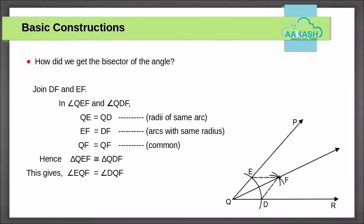Now we will see how exactly we got the angle bisector. Join DF and EF. In triangle QEF and triangle QDF, QE is equal to QD because we have drawn them using same radius. EF is equal to DF since both arcs have same radii. QF is equal to QF since it is common. Therefore using SSS rule, triangle QEF is congruent to triangle QDF. Since the triangles are congruent, we can declare that angle EQF is equal to angle DQF.